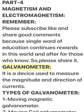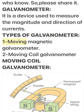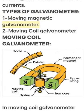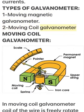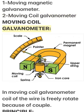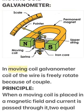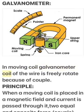Galvanometer: It is a device used to measure the magnitude and direction of currents. Types of Galvanometer: 1. Moving Magnetic Galvanometer. 2. Moving Coil Galvanometer. In a moving coil galvanometer, the coil of wire is free to rotate because of a couple.